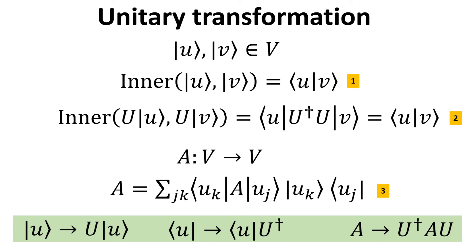Now, let's consider an operator A which maps the vector space V onto itself. Recall that an operator can be expressed in terms of a sum of outer products using the orthonormal basis set U sub j kets. A unitary transformation of the basis set kets and bras by operator U would then yield a transformation of operator A, given by U dagger A U as shown in the green box. We say that matrix A is unitarily transformed by the unitary operator U.